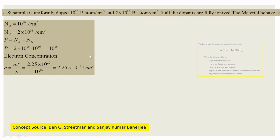The next problem: a silicon sample is uniformly doped with 10¹⁶ phosphorus atoms (pentavalent, donor) and 2 × 10¹⁶ boron atoms (trivalent, acceptor) per centimeter cube. So Nd = 10¹⁶ and Na = 2 × 10¹⁶. The phosphorus donors are fully ionized, while the boron atoms are neutral. Using the exact formula, P = Na − Nd = 2 × 10¹⁶ − 10¹⁶ = 10¹⁶ per centimeter cube.